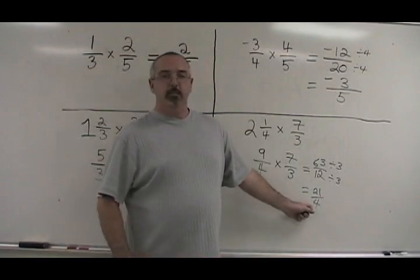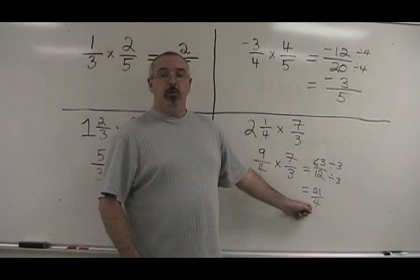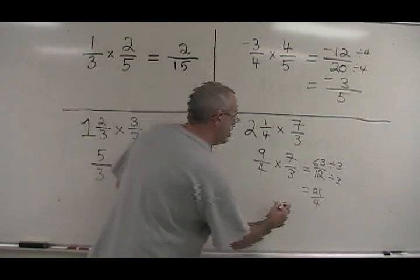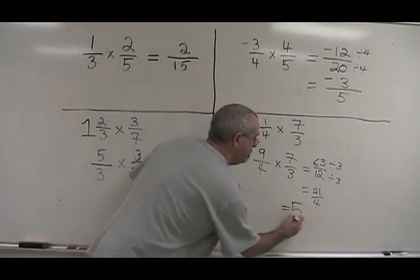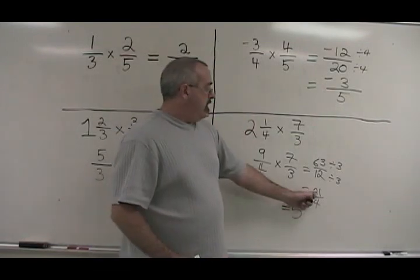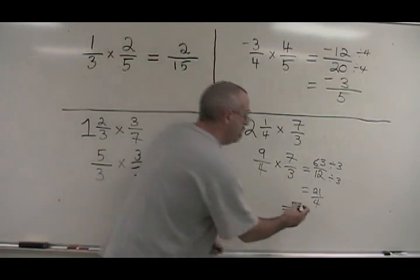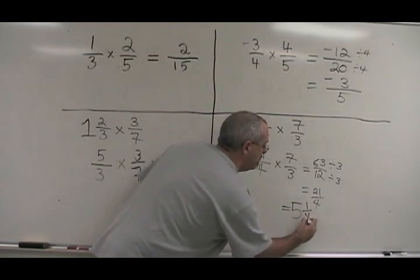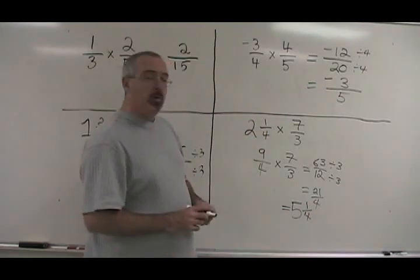The answer is an improper fraction. We should convert it into a mixed number to give the most simplified answer. 4 goes into 21 five times. 4 times 5 is 20. 21 minus 20 is 1. There is 1 left in the numerator, and we still have 4 as our denominator. 5 and 1 quarter is the answer.